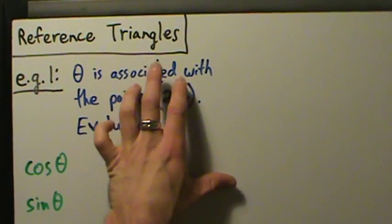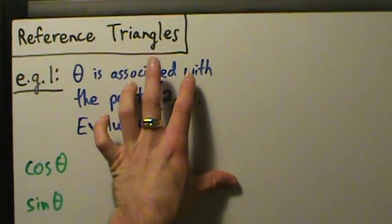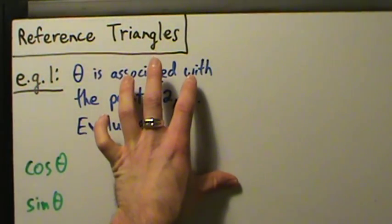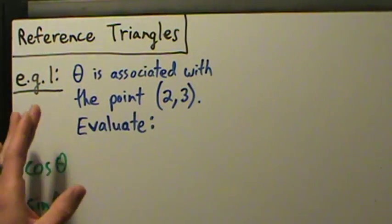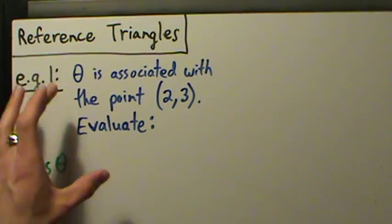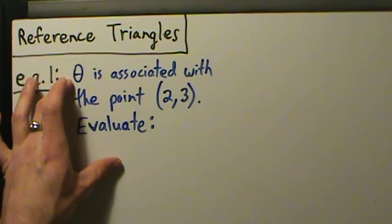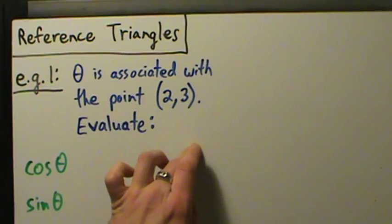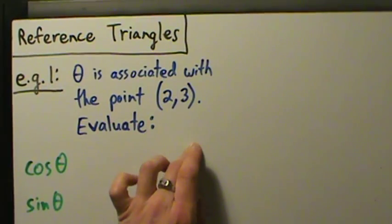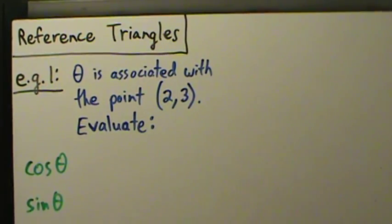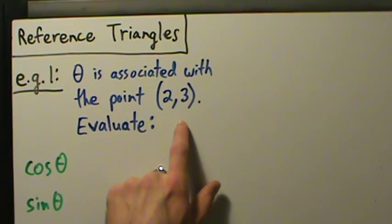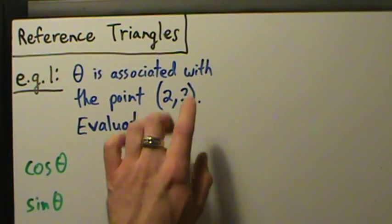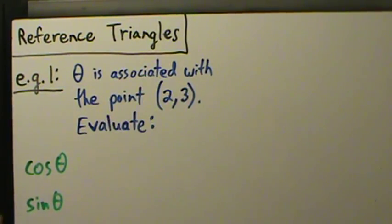Remember this phrase 'associated with' — we talked about that a few videos ago. That just means that theta is an angle in standard position, which means vertex at the origin, initial side on the positive x-axis, and the terminal side of theta goes through the point (2, 3). That's what 'associated with' means.